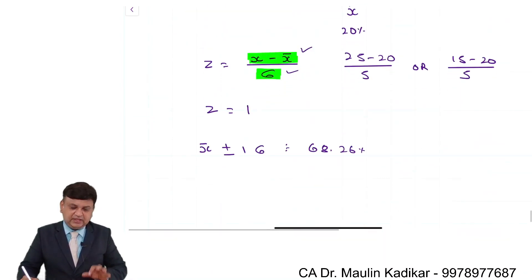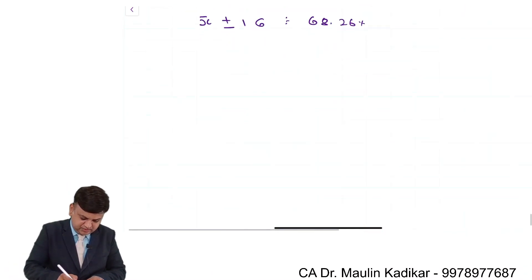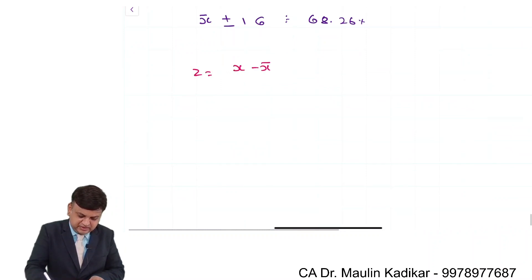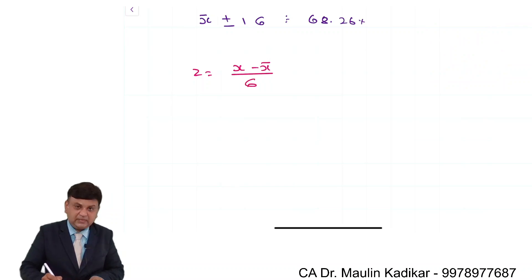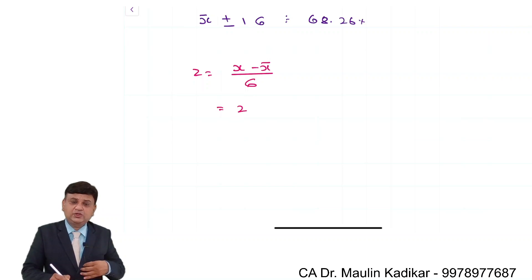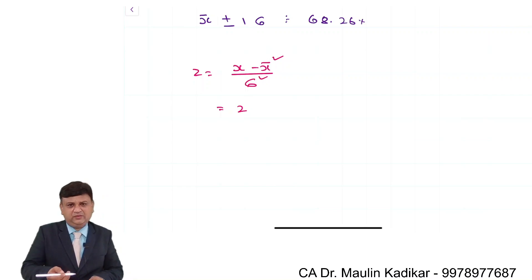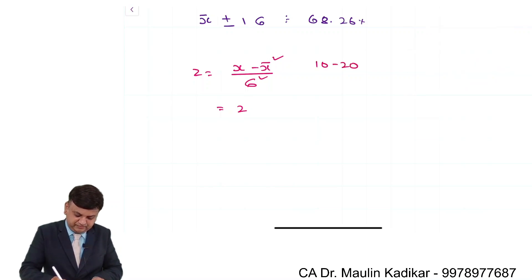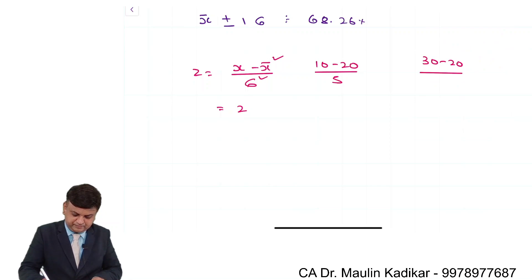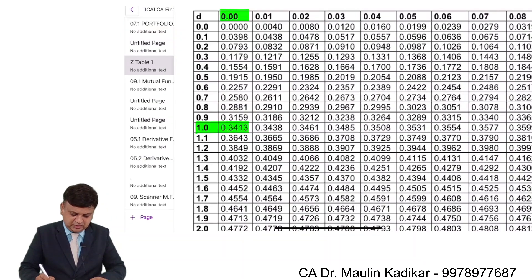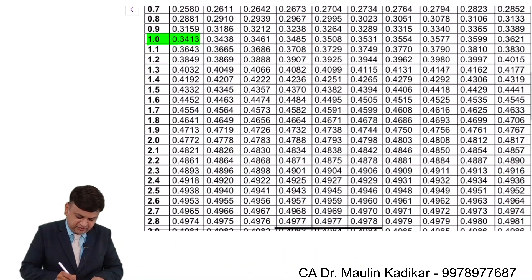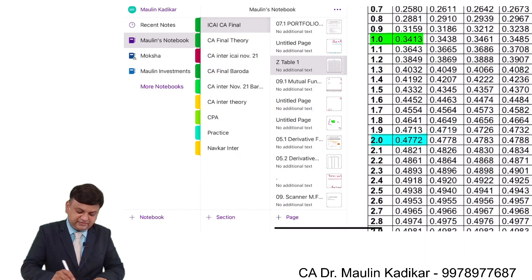Now, suppose the Z formula gives an answer of 2. That means we are looking at double the standard deviation. For this example: (10 − 20) / 5 = −2 and (30 − 20) / 5 = 2. So the answer is 2. The Z-table reading for 2 is 0.4772.